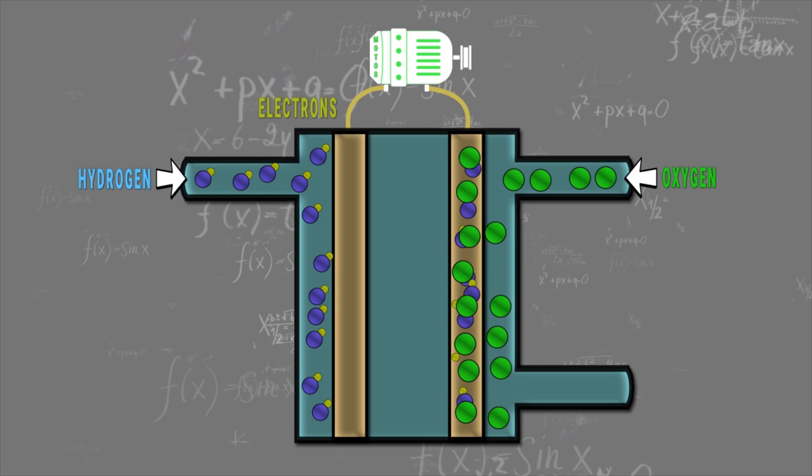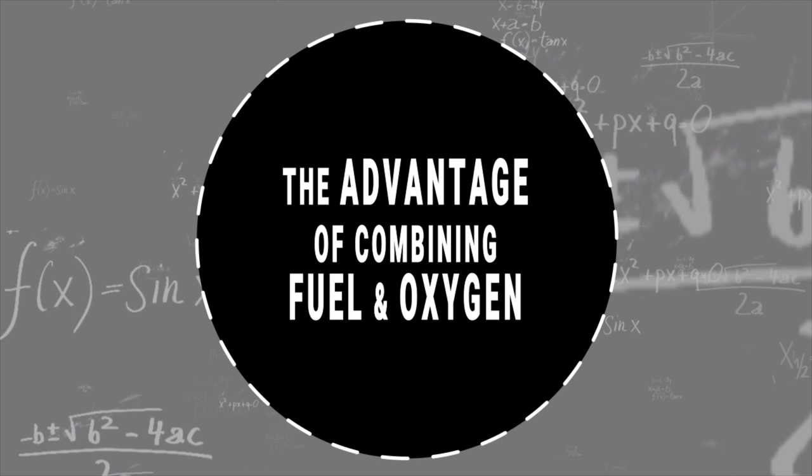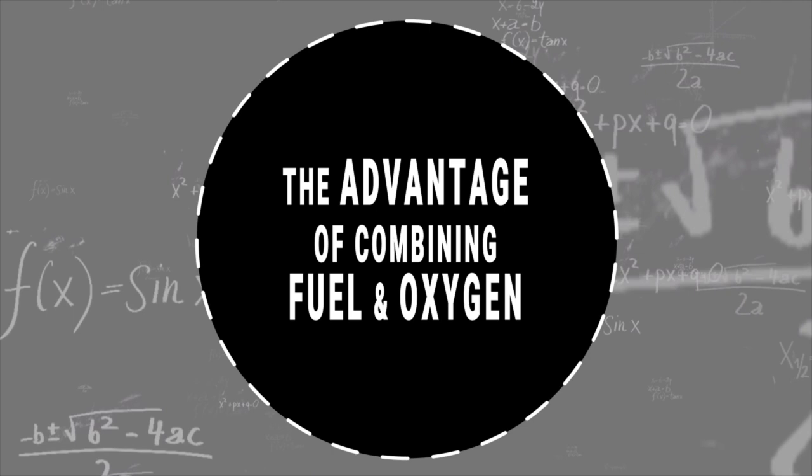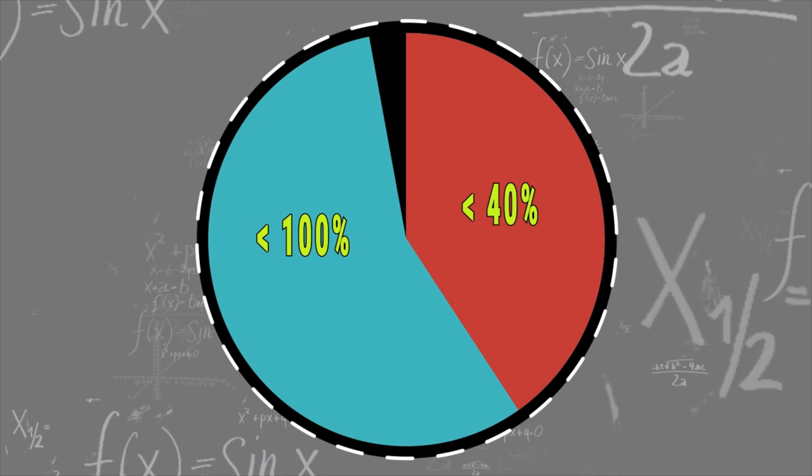The electrodes can be made of porous carbon coated with a catalyst, such as platinum or nickel. The advantage of combining fuel and oxygen in a cell is that you can, in theory, convert most of the chemical energy to electricity, whereas burning them, as it happens in the internal combustion engine of a car, has a maximum efficiency of about 50%. In practice, only about 25% of the chemical energy does the useful work in driving the engine. The rest comes out as waste heat.